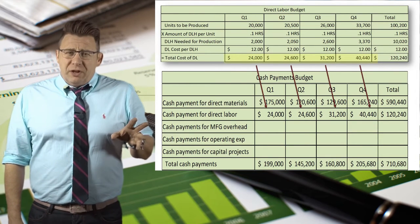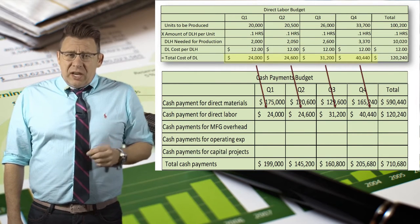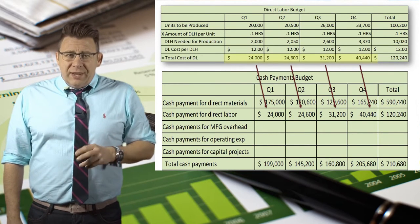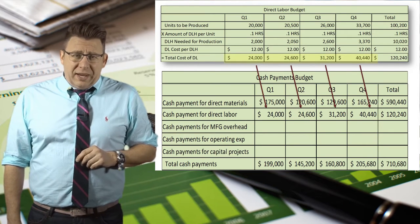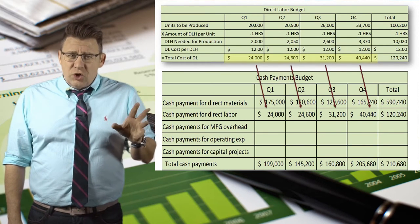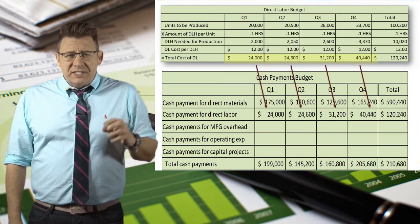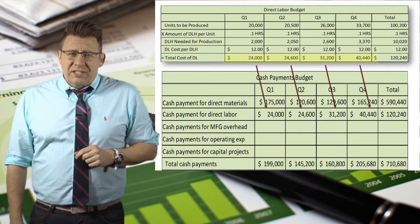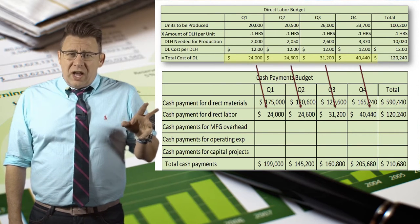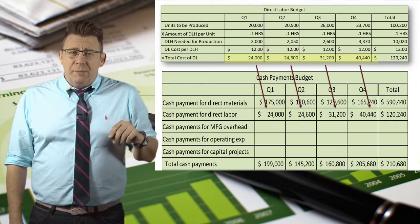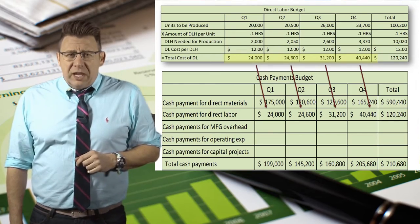So we would enter Q1 purchases of material into Q2 payment of material. Using the direct labor budget, we can see the cost of our labor. It's unlikely employees will wait a quarter to be paid, so let's assume that the amount owed is paid in the same quarter the costs are incurred. So we enter Q1 costs for direct labor into Q1 payment for labor.